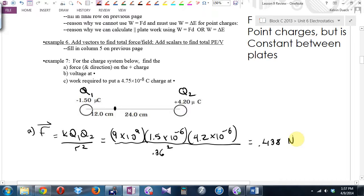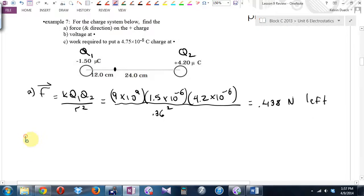9 times 10 to the ninth, 1.5, 4.2, divided by 0.36 squared. Do you get that? 0.438 if I go to three sig figs. Newtons. Direction. And it wants the direction on the positive charge. So I will have to tell you which charge we happen to be focusing on so you know. Direction. So that positive charge which way will it be feeling a force? Left, right, up, or down? Oh, because unlike charges attract. Left. What else could I ask you to find from this configuration? I could ask you to find the net electric field at the dot. I didn't. But I will. I could also ask you part B find the voltage right there.